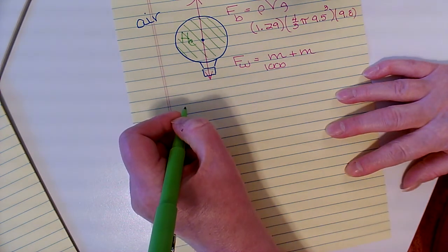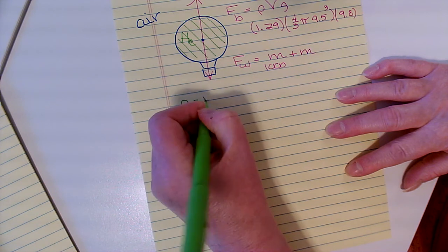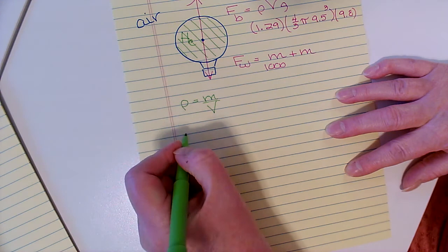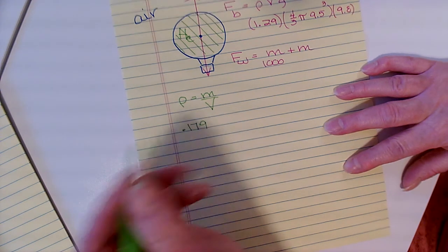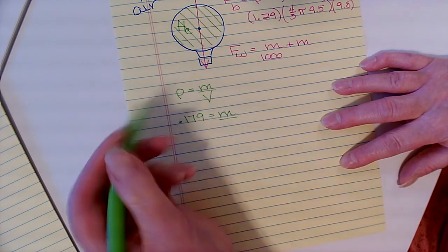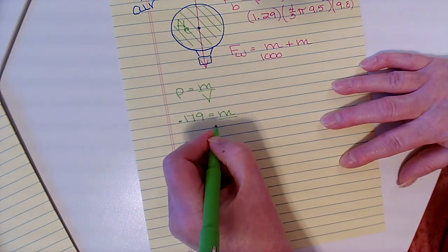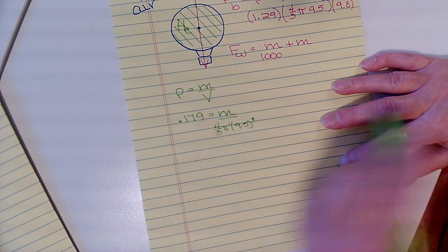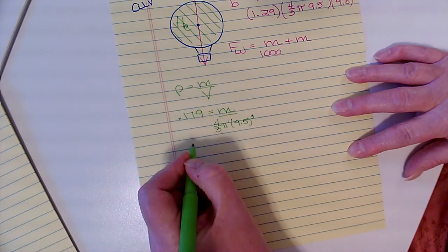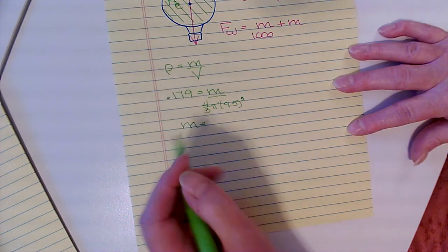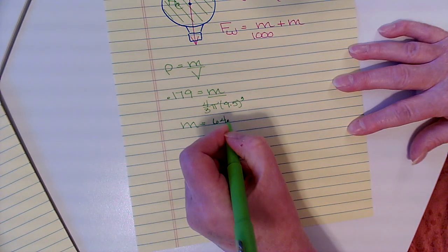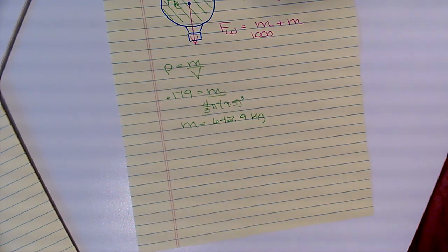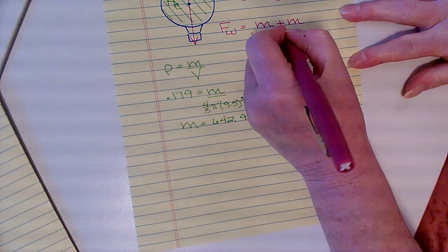Density, remember we use the symbol ρ, equals mass over volume. The density of helium is 0.179 and we're trying to find the mass. The volume is the whole spherical balloon, so again it's 4/3πr³, 9.5 cubed. We multiply these two things together to get m and we find out that the mass of the helium is pretty significant - it's 642.9 kilograms. That's a lot, so it would not be right to do the problem and not include the mass of the gas.